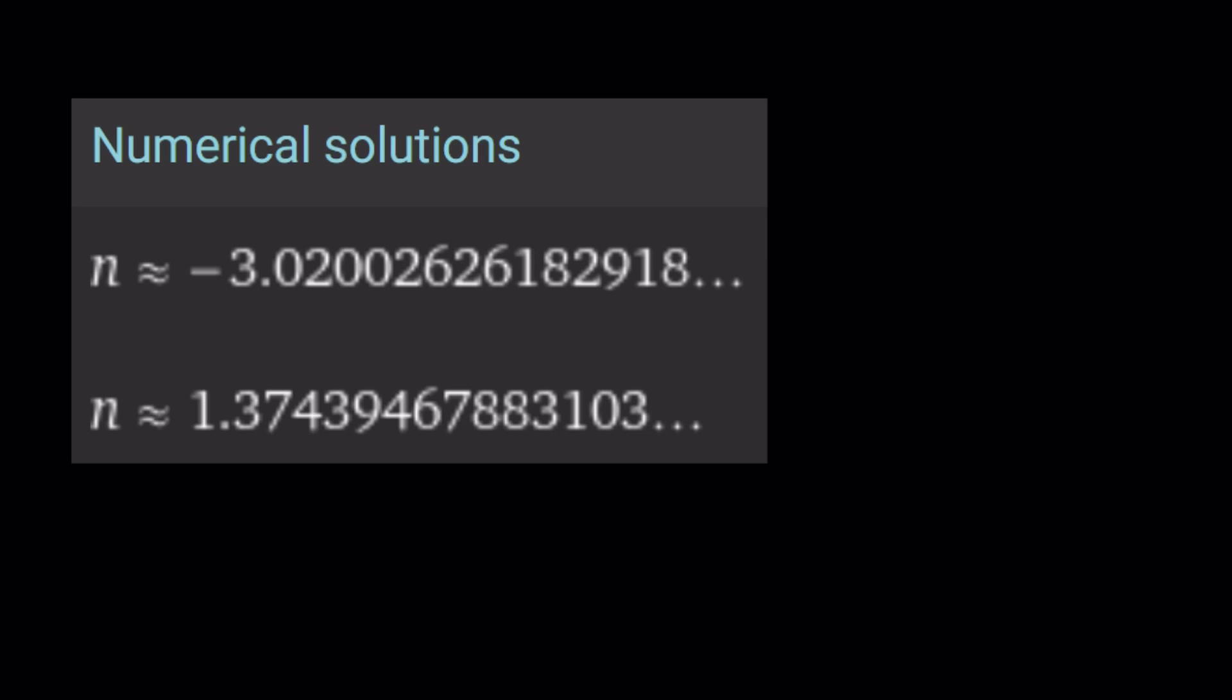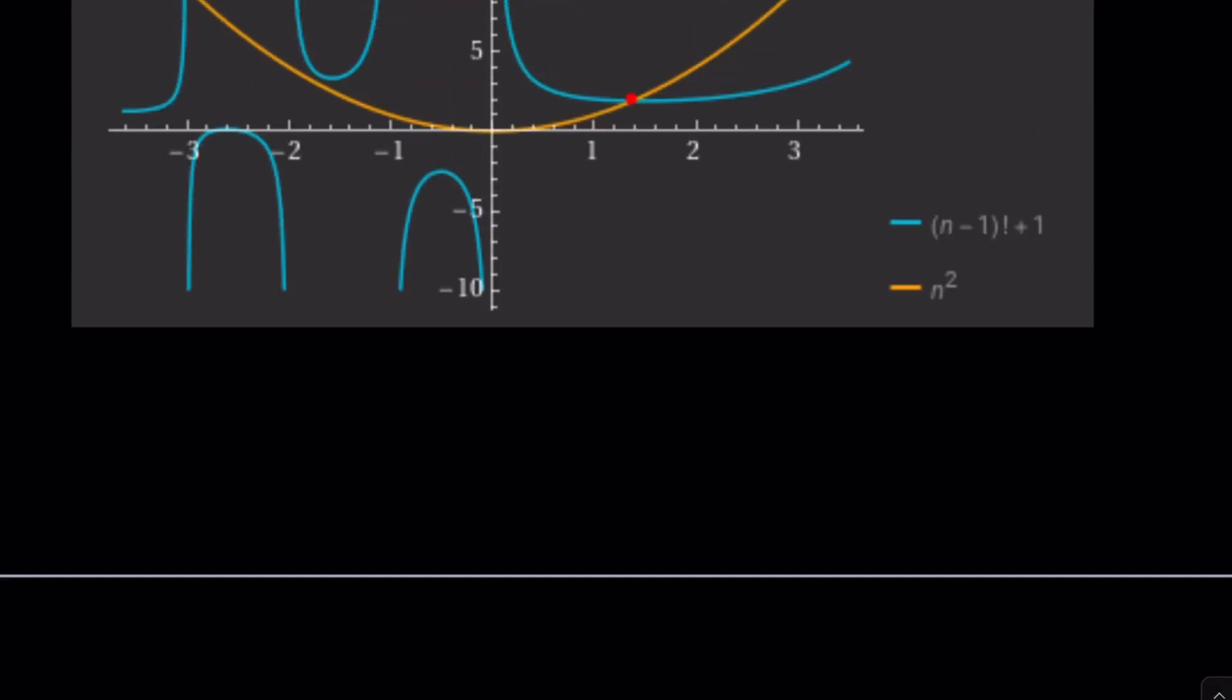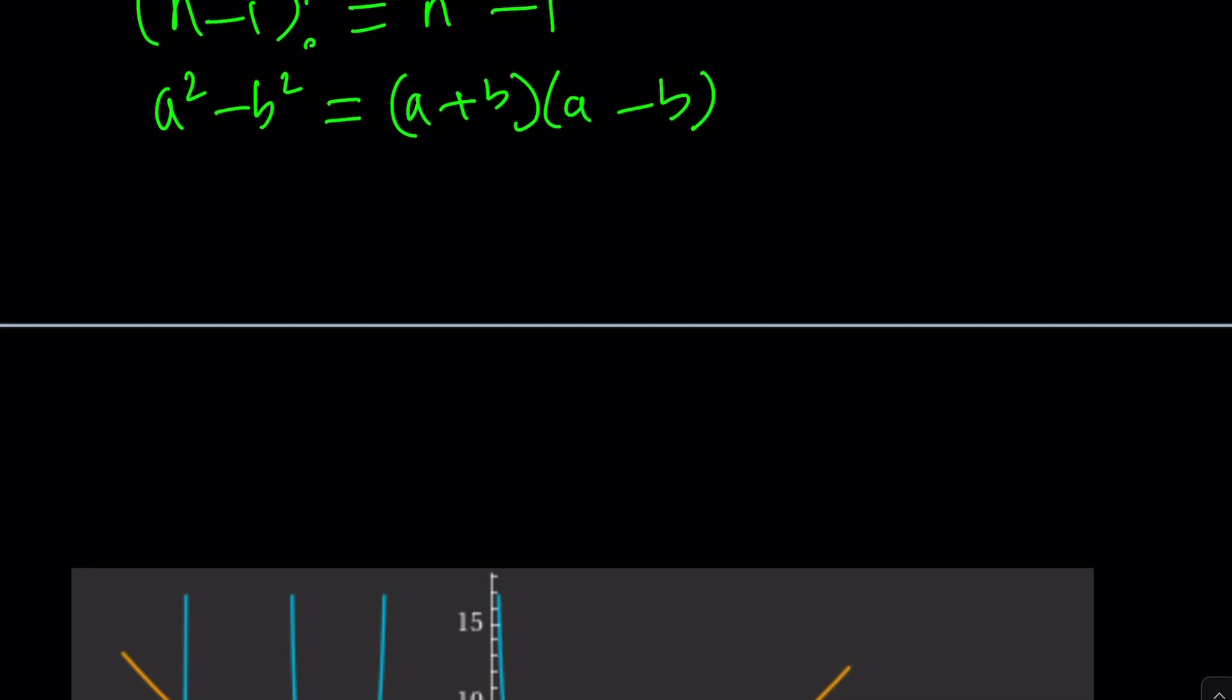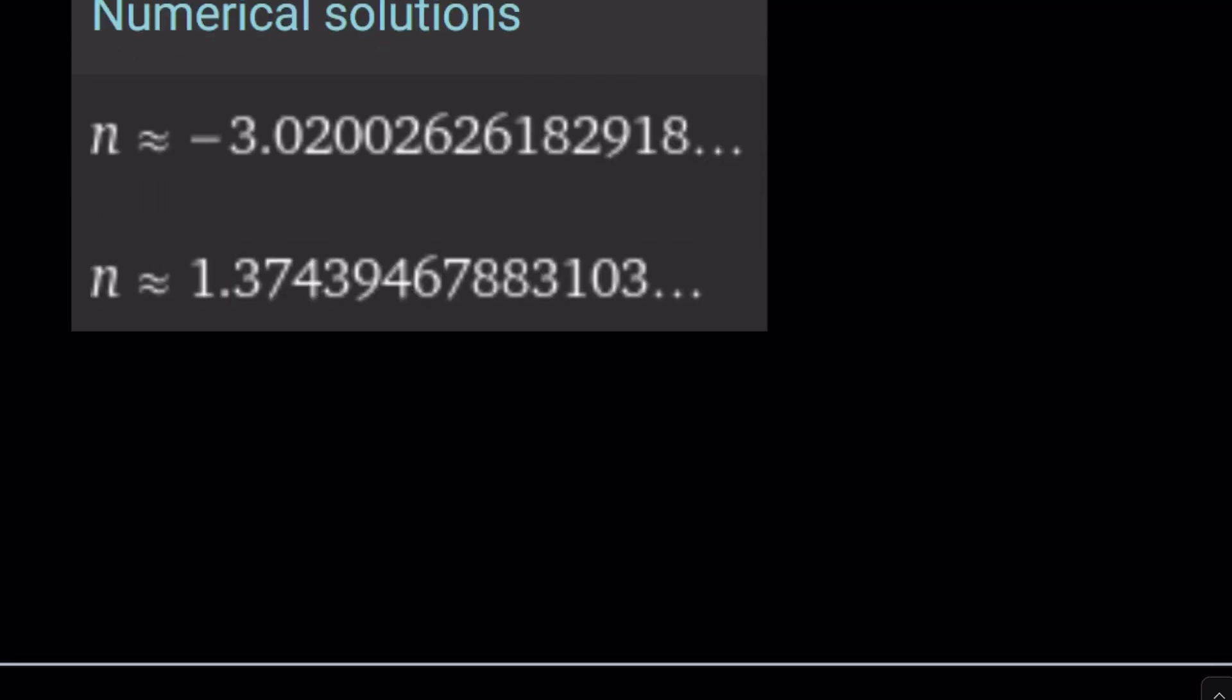Obviously, they're going to be approximations, and this is what they are. One of them is pretty close to negative 3, but unfortunately, negative 3 factorial does not exist. Cool. Let's proceed with what we have here, which is n minus 1 factorial.